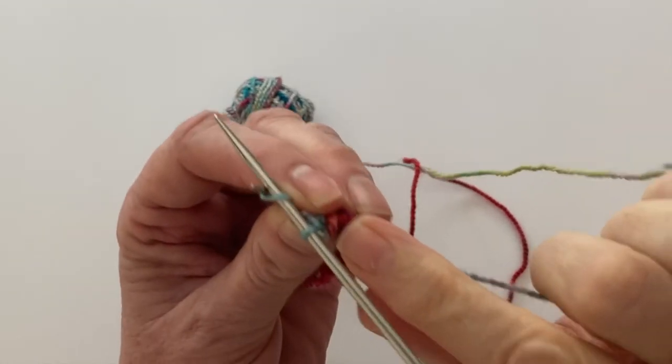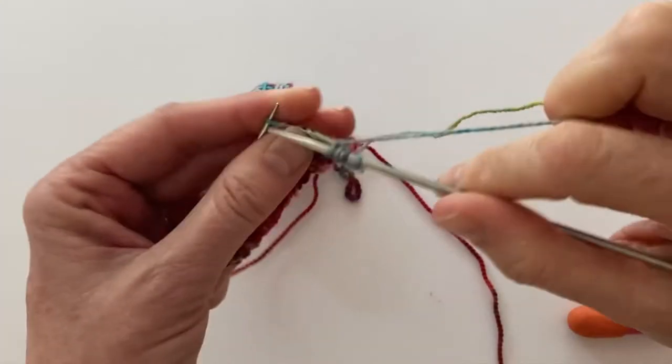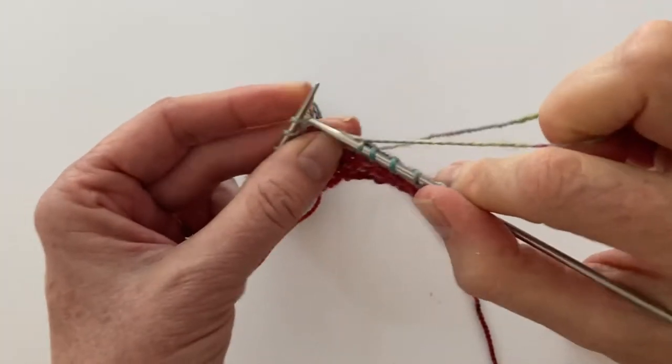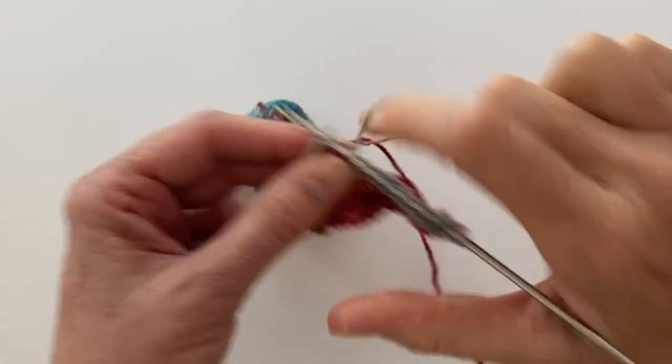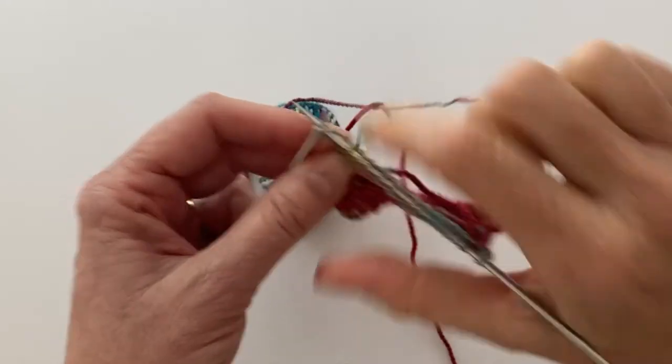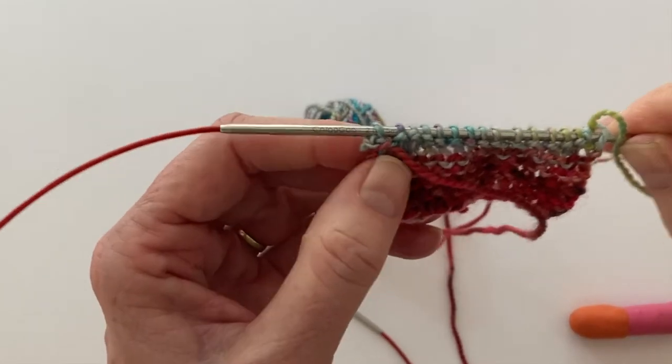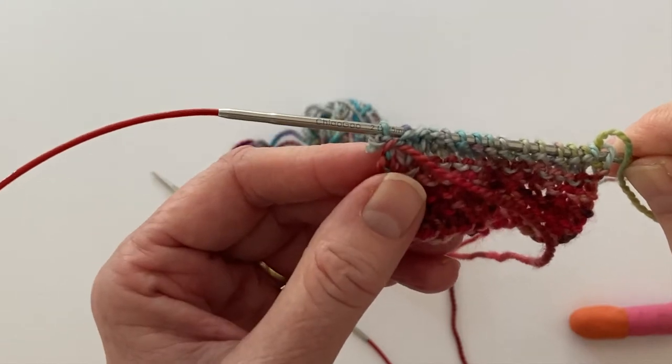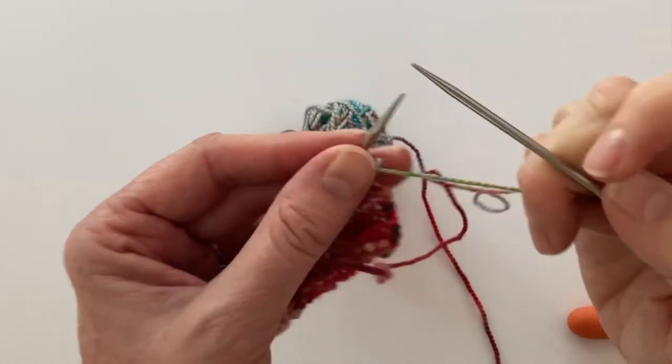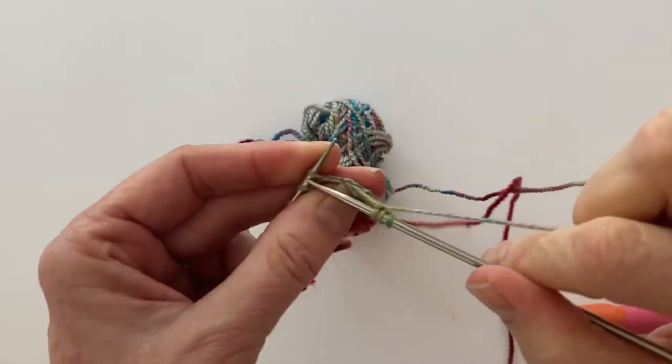I've just wrapped it across the working yarn there and I'm going to knit the stitch and keep knitting to the end of the row. What I decided to do was to wrap that working yarn on both the right and the wrong side rows because it makes the little step of yarn on the contrast color smaller.